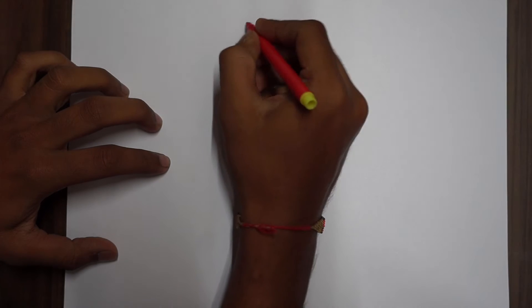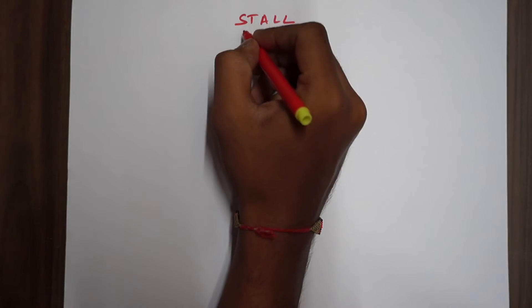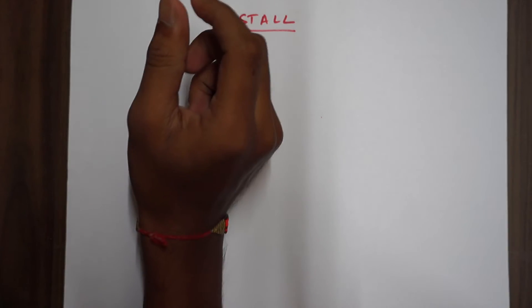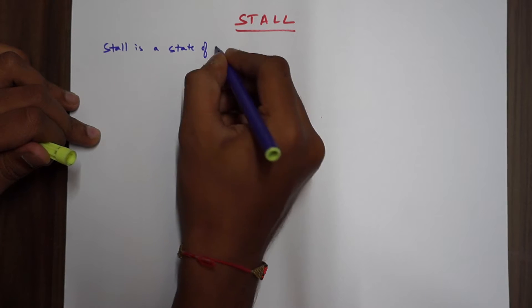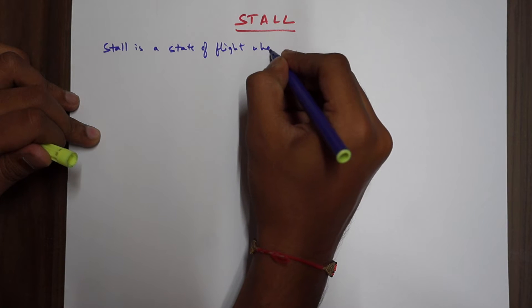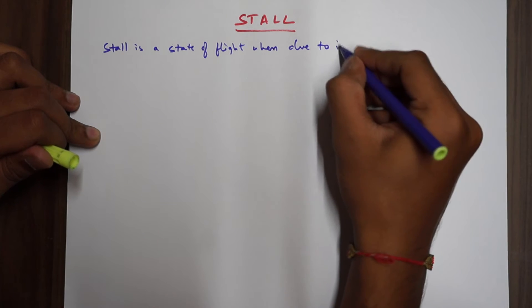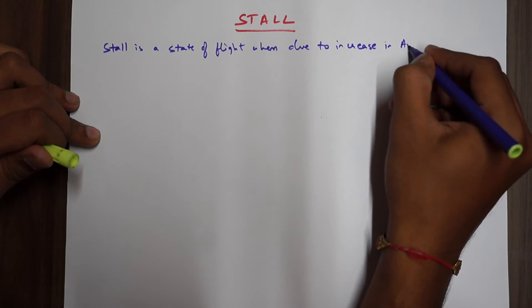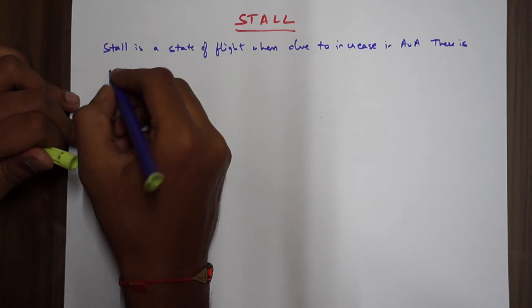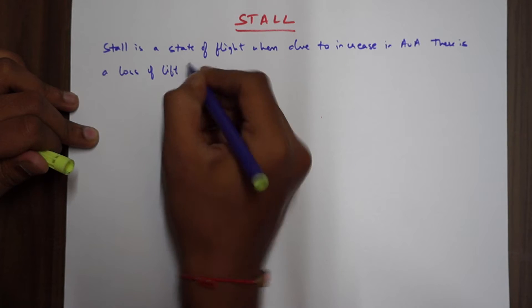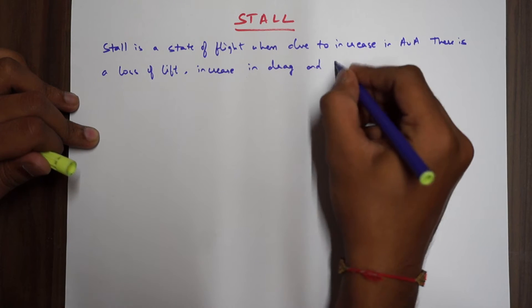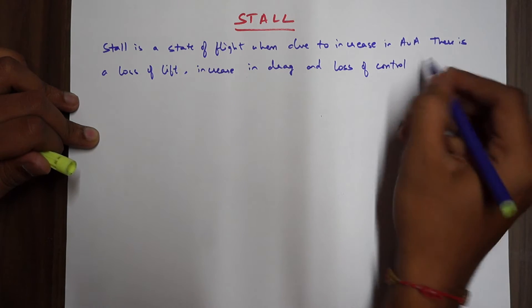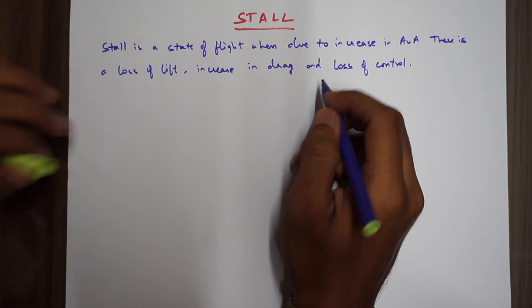Welcome back. Today we are going to discuss stall. Stall is a state of flight when, due to an increase in angle of attack, there is a loss of lift, increase in drag, and loss of flight control.